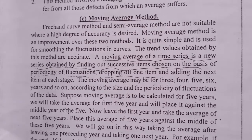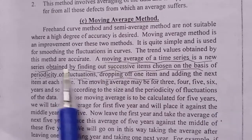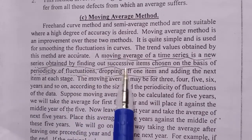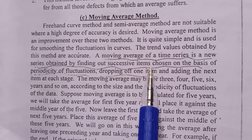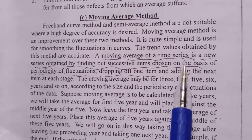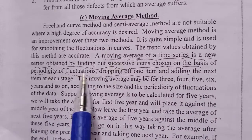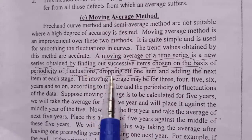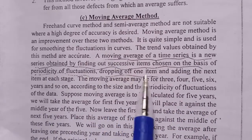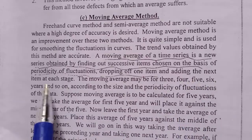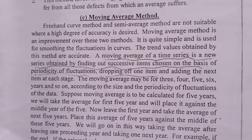A moving average of a time series is a new series obtained by finding out successive items chosen on the basis of periodicity of fluctuations, dropping off one item and adding the next item at each stage.